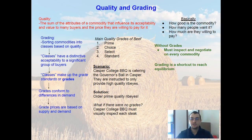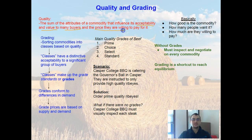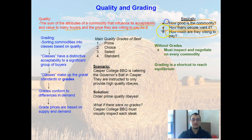In the last video we were talking about trading by description and descriptive terms. We said they were useful but never quite enough because quality matters. Quality is some of the attributes of a commodity that influences acceptability and value to many buyers, and the price they're willing to pay. Essentially, how good is the commodity, how many people want it at that particular quality, and how much would they be willing to pay for it?